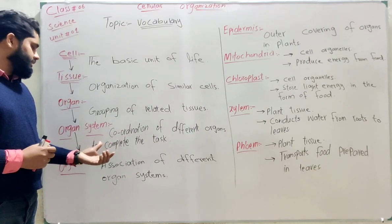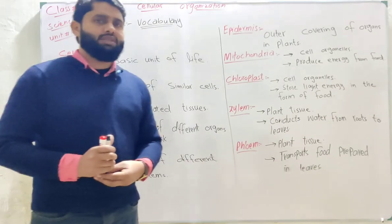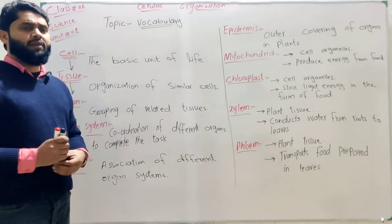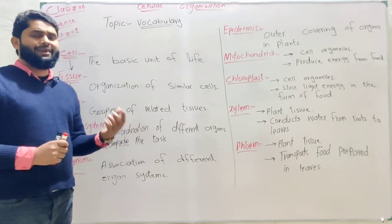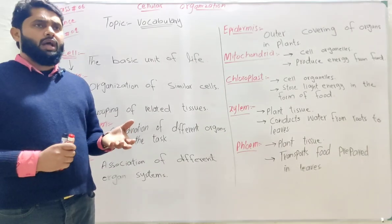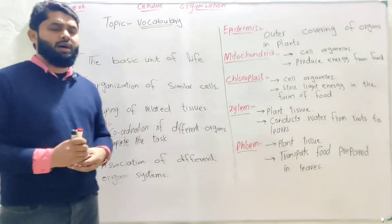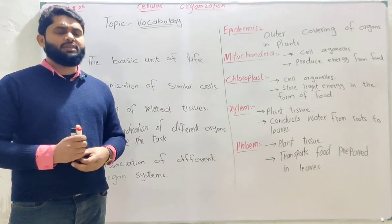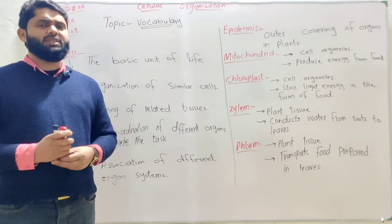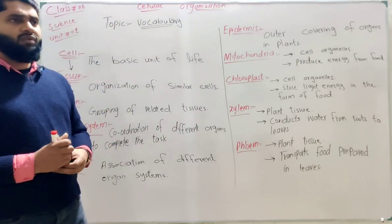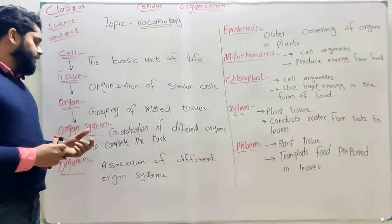In animals we see different organ examples like brain, kidney, liver, lungs, nose, and eye — these are different organs with different functions. Next we see organ system: the coordination of different organs to complete a task. Coordination is the process in which different substances combine and work at specific tasks. For example, the digestive system is a system in which the function is performing digestion of food. In this system, different body organs like mouth, stomach, esophagus, liver, and pancreas work in coordination to perform digestion of food.